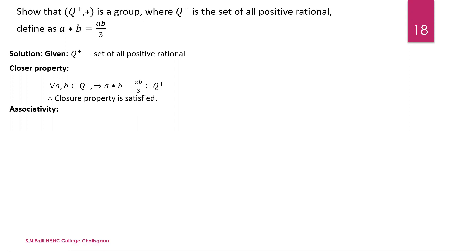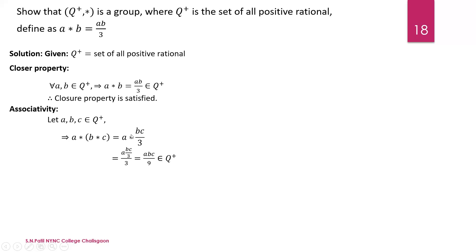For associativity, take three elements a, b, c belonging to Q+. We show the left-hand side: a star (b star c). Here b star c is defined as bc/3. So a star (bc/3) equals a into (bc/3) divided by 3, which gives abc/9. Since a, b, c are positive rationals, abc/9 is also a positive rational belonging to Q+.